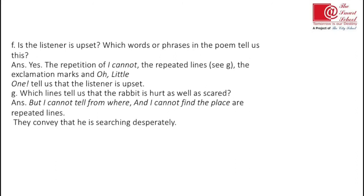Number g: which lines tell us that the rabbit is hurt as well as scared? The answer is: 'But I cannot tell from where' and 'I cannot find the place' are repeated lines. These lines continuously repeat in the poem and convey that the child is searching desperately. The listener is really upset and truly wants to help the rabbit, trying everywhere to find out where the rabbit is trapped.